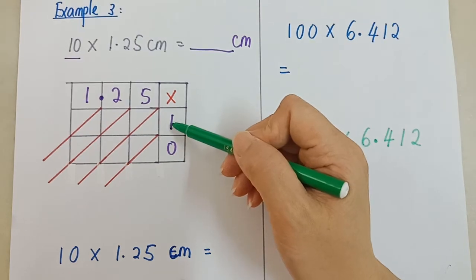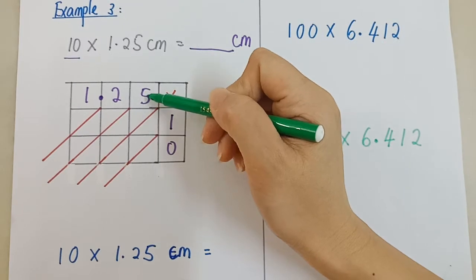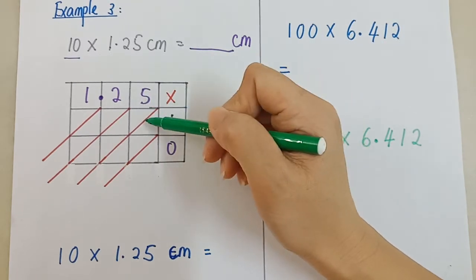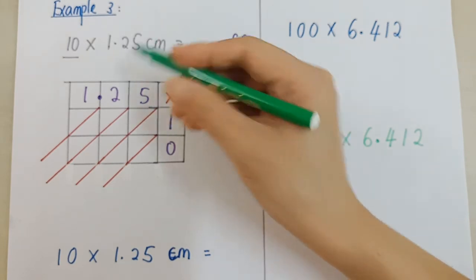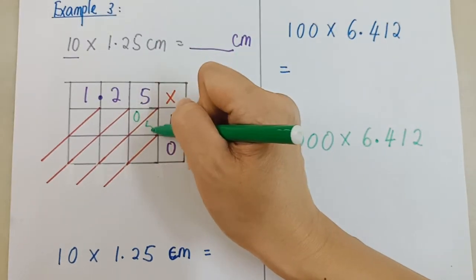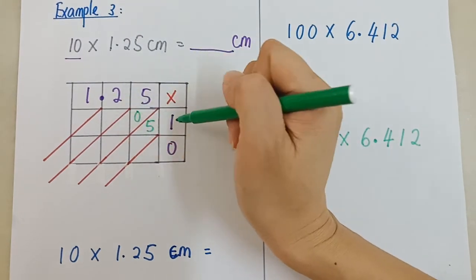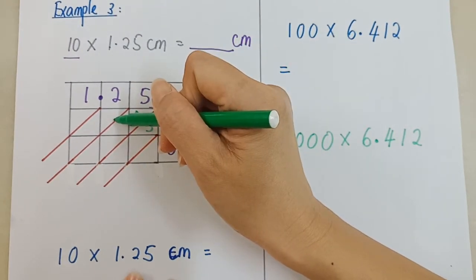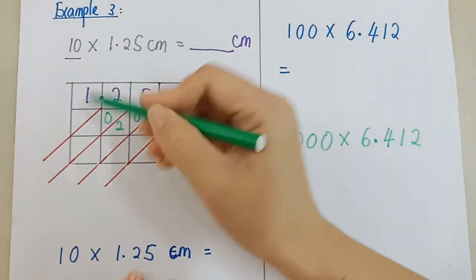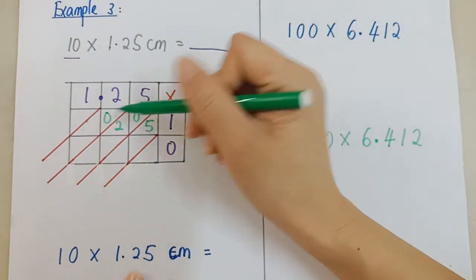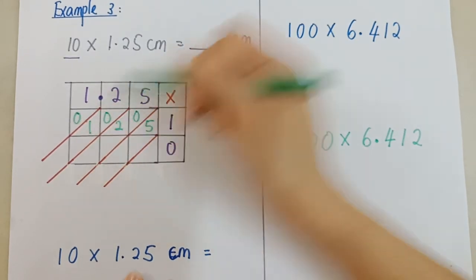Lepas tu, kita isikan sifir-sifirnya. Tengok sini barisan pertama ni. Petak pertama 5 kali 1, 5 times 1, 5 kan? 5, awak kena tulis 0, 5. Petak ini 2 times 1, 2 kan? Tulis 0, 2. Petak ini 1 times 1. The answer is 1, right? So you write 0, 1.